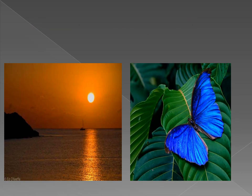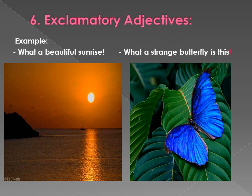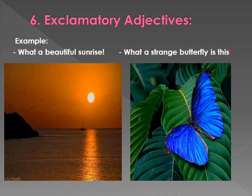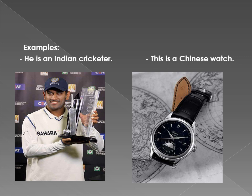Sixth type of adjective is exclamatory adjective. These adjectives tell the quality in exclamatory form. For example: 'What a beautiful sunrise!' — it means the sunrise is very beautiful, it is not a question. And 'What a strange butterfly!' — we are expressing how beautiful or strange something is. So 'what a beautiful' and 'what a strange' are exclamatory adjectives.